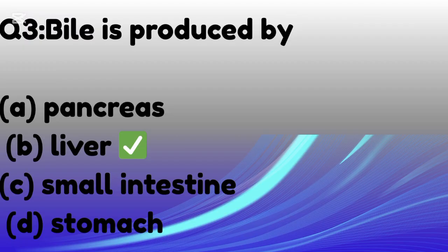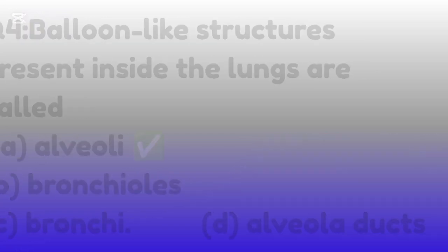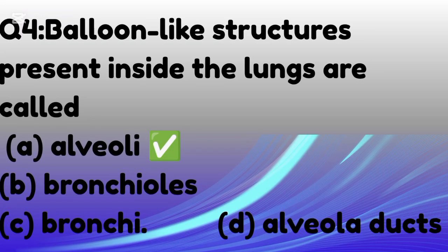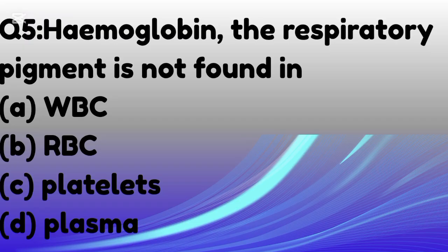The next question is: bile is produced by — the correct option is liver. Balloon-like structures present inside the lungs are called — the correct option is A: alveoli.